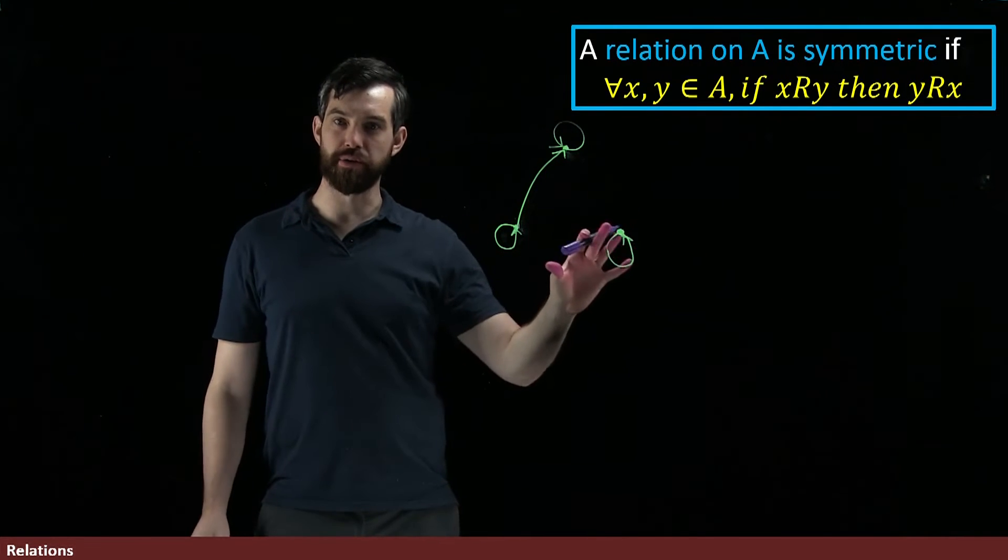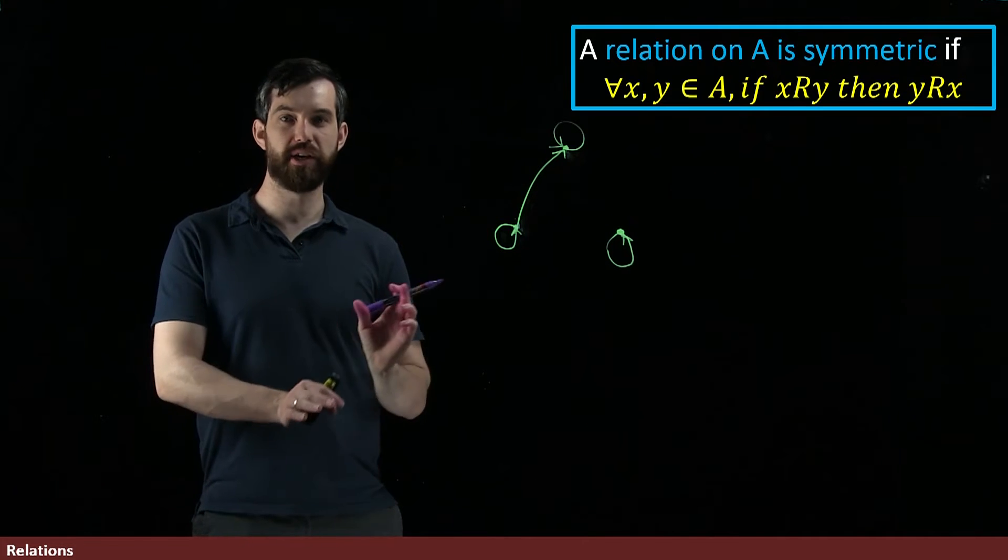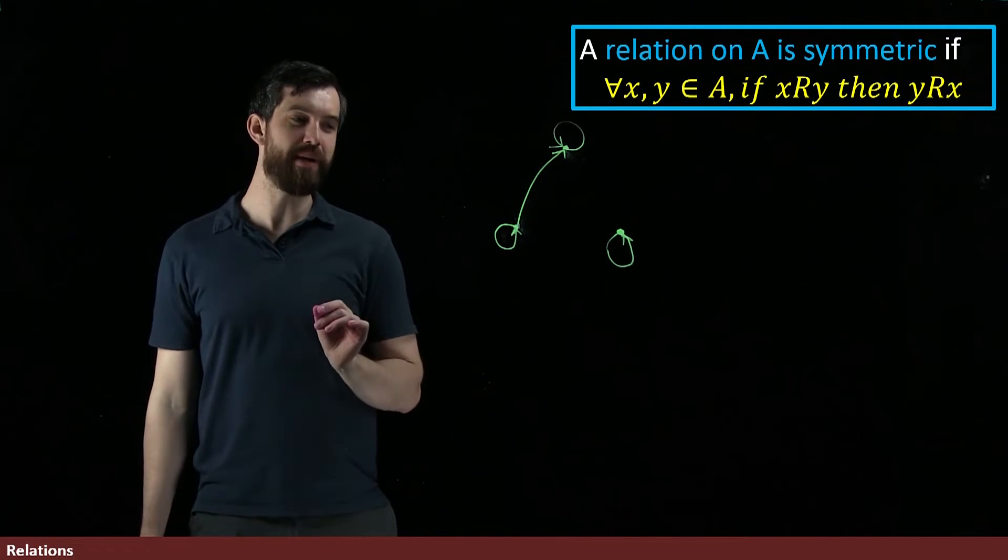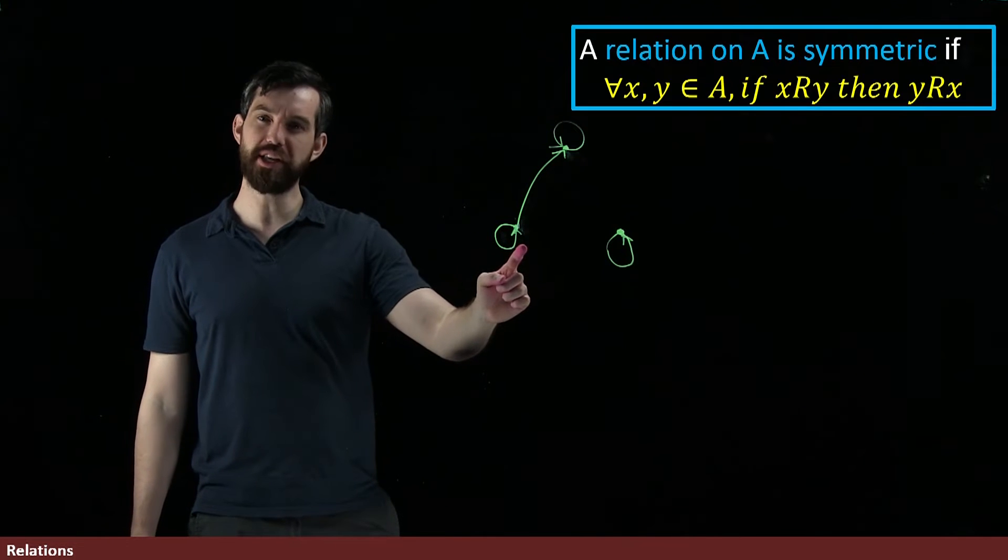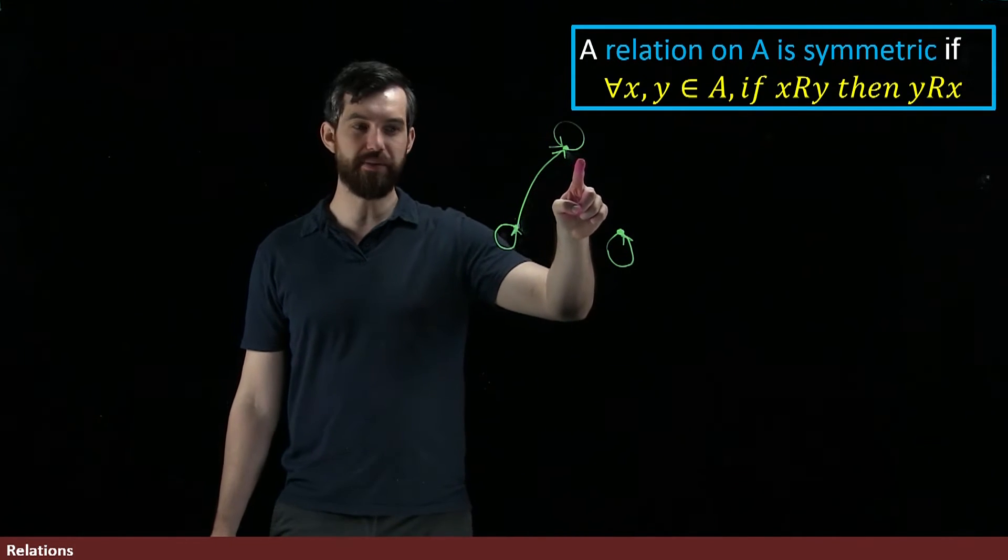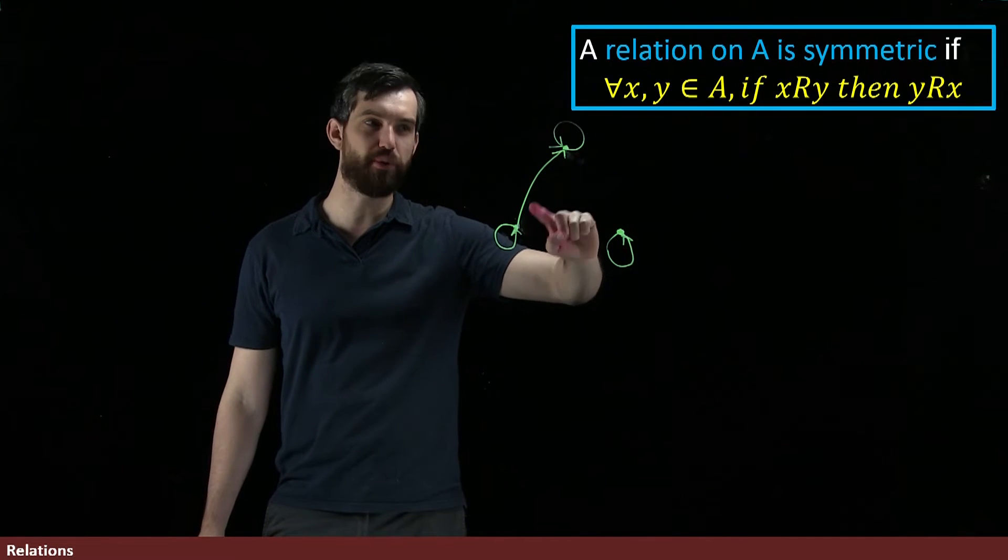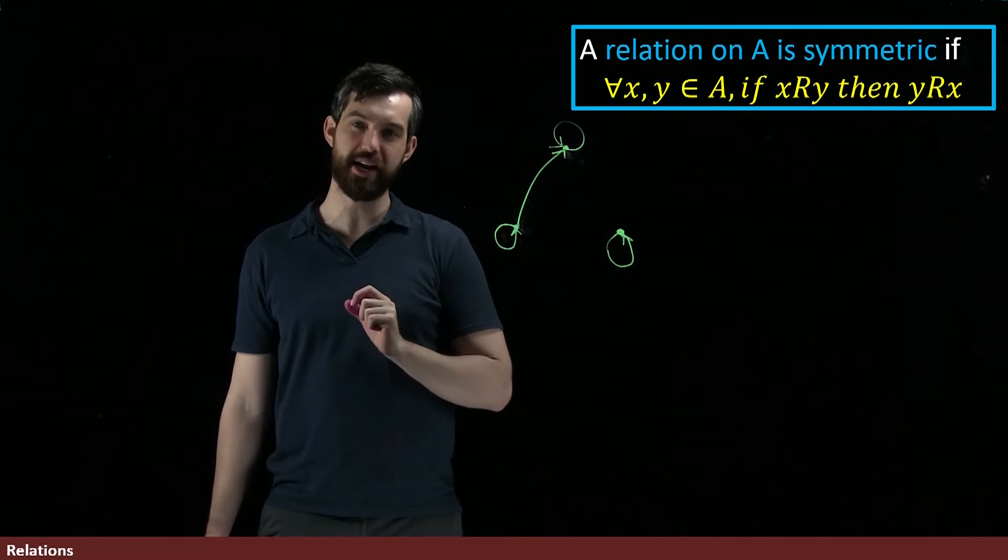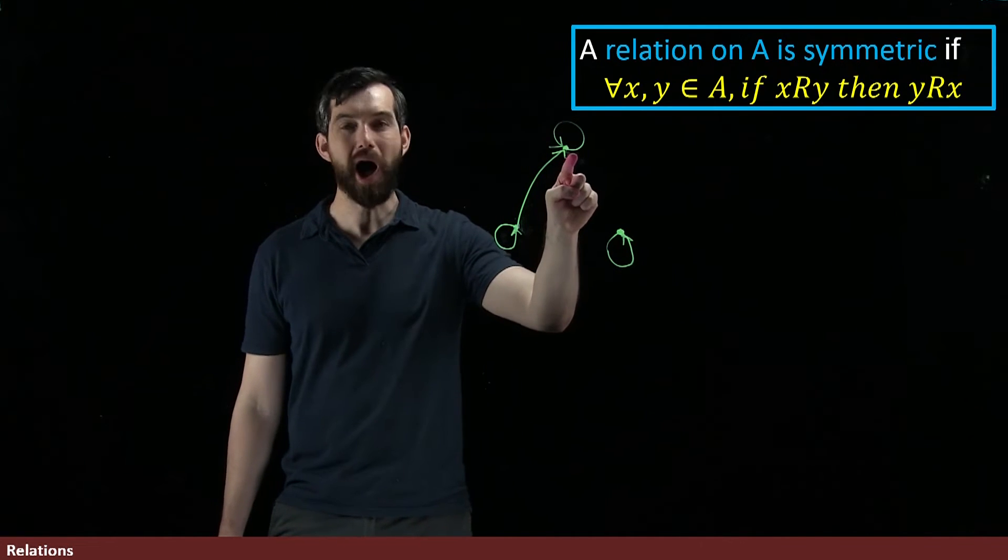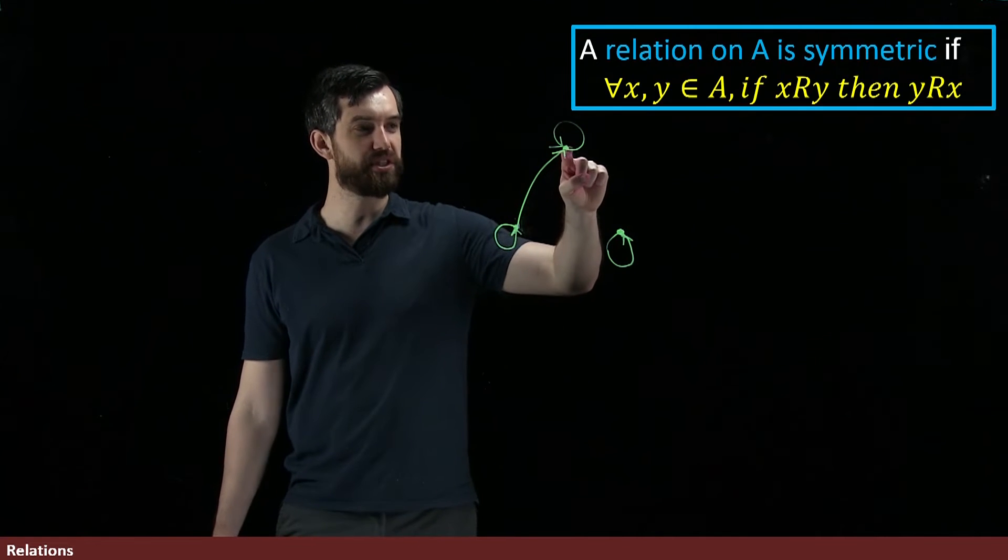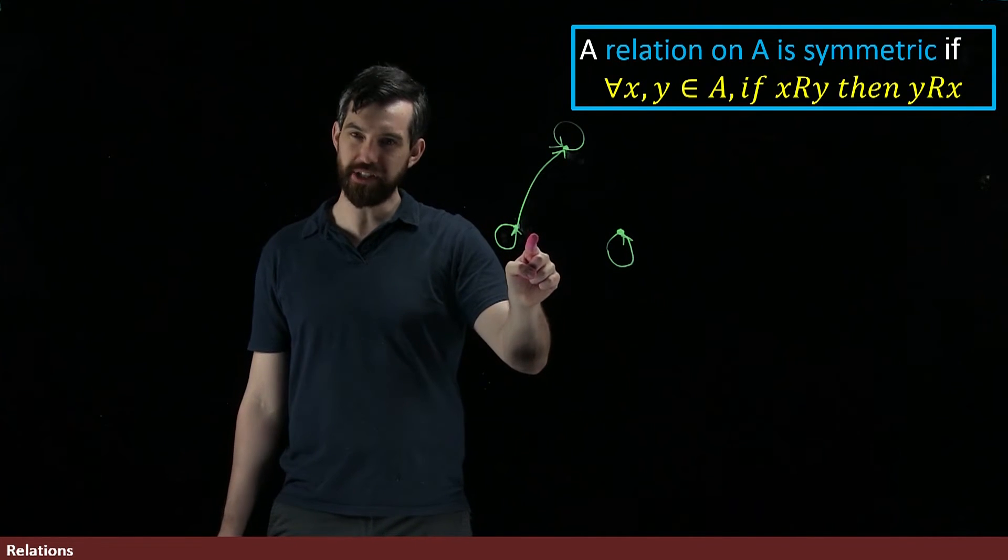As drawn, this particular directed graph that I have, this relation on A, is not symmetric. It fails to be symmetric because if this point here is my x and this point here is my y, then I have a relationship between x and y. X is related to y here because of this arrow connecting them. But y is not related to x because there's not an arrow that starts at the y and finishes at the x.